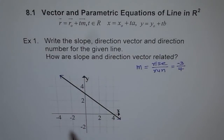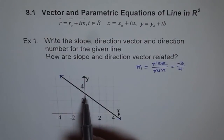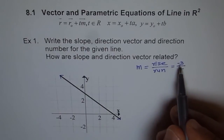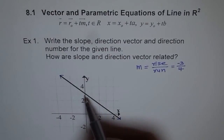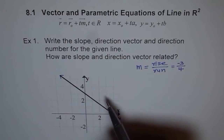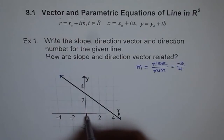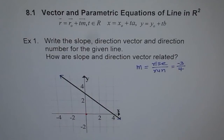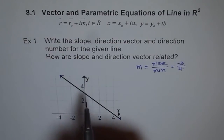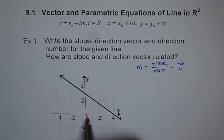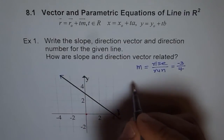Now, direction vector — in which direction does the line go? This direction vector always starts from the origin. We have to translate this line to the origin. From the origin, we look at how many places we go in x and then in y. In a direction vector, we always write it as x and y components.